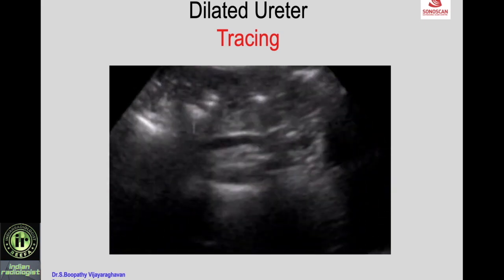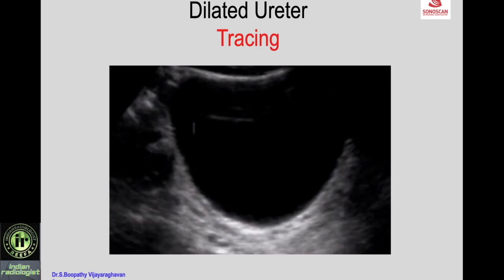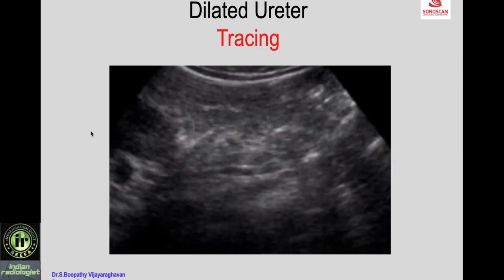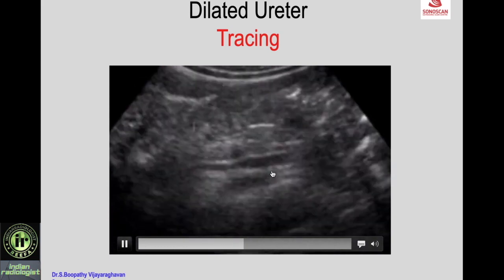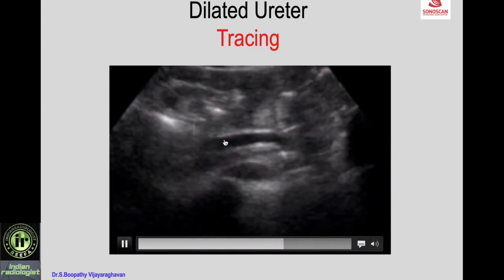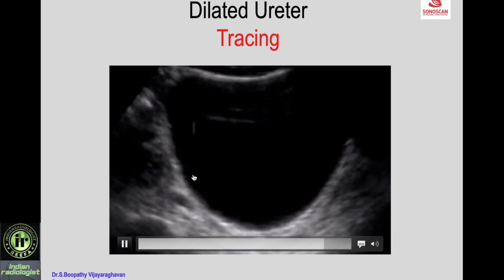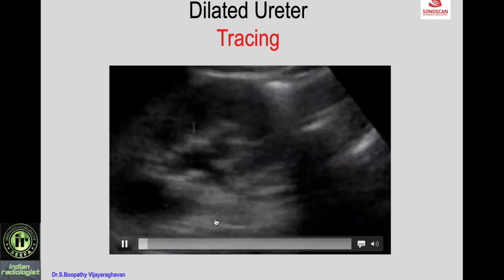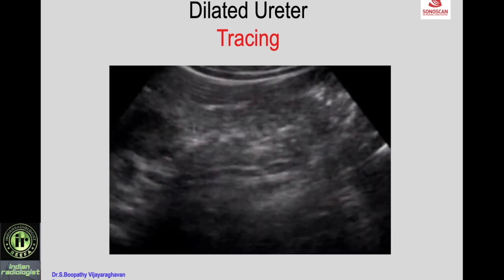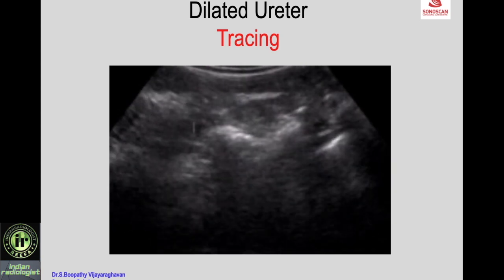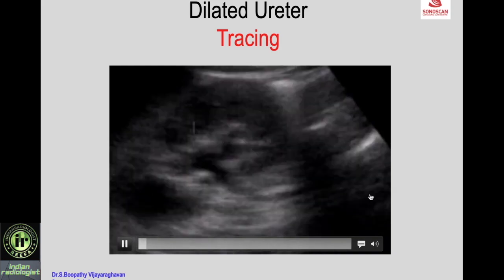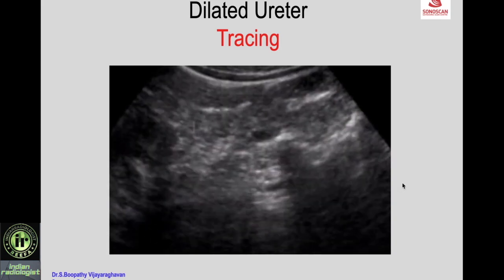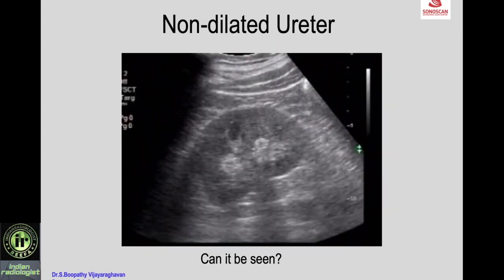As seen here, you can see from the kidney the calyces are dilated, the upper ureter is dilated, and then you trace it to see the mid ureter, the pelvic crossing, the lower ureter dilated, and the ureter ending up to the bladder with a calculus at the UVJ. That is how a dilated ureter can be traced.